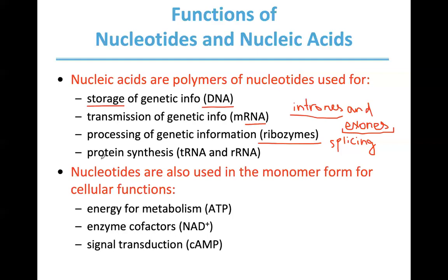Once you have mature messenger RNA after splicing, it goes to the ribosomes. There are three kinds of RNA: messenger RNA, transfer RNA, and ribosomal RNA. Ribosomal RNA is basically found at ribosomes, which are the sites where proteins are synthesized. Transfer RNA brings amino acids to the site of synthesis. Messenger RNA carries the sequence of amino acids, which is read by the ribosome and the protein chain is synthesized. Important to remember: one type of DNA and three types of RNA.